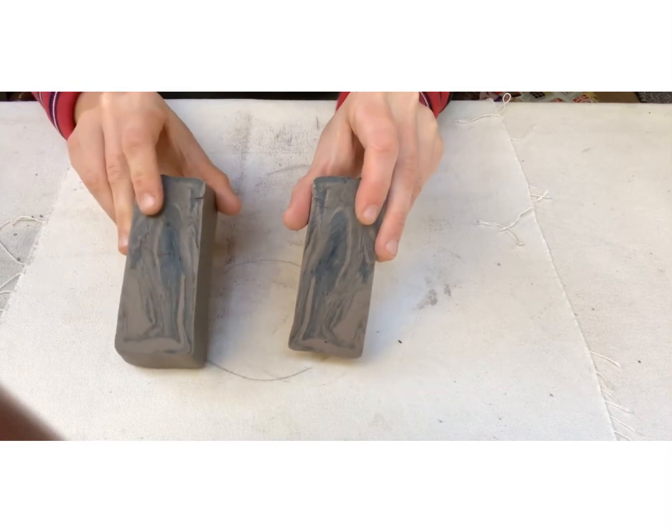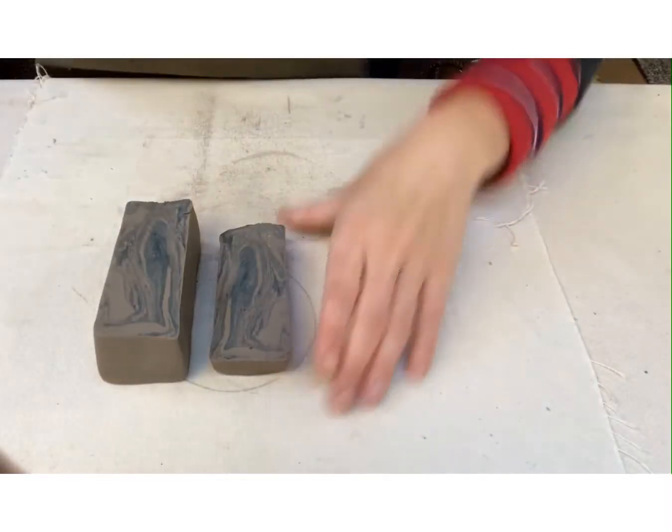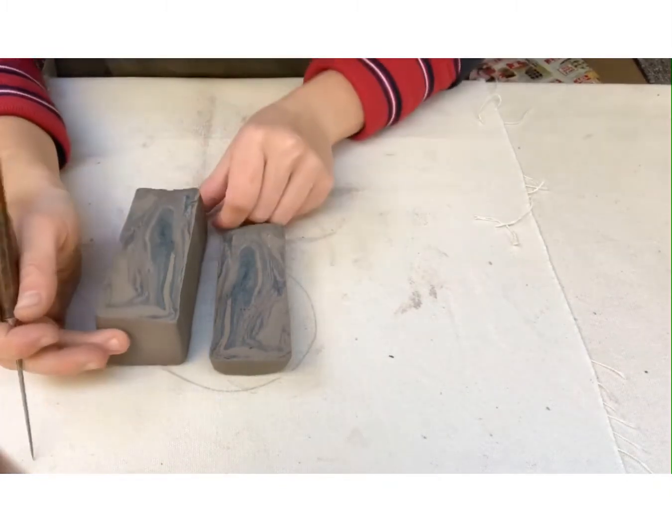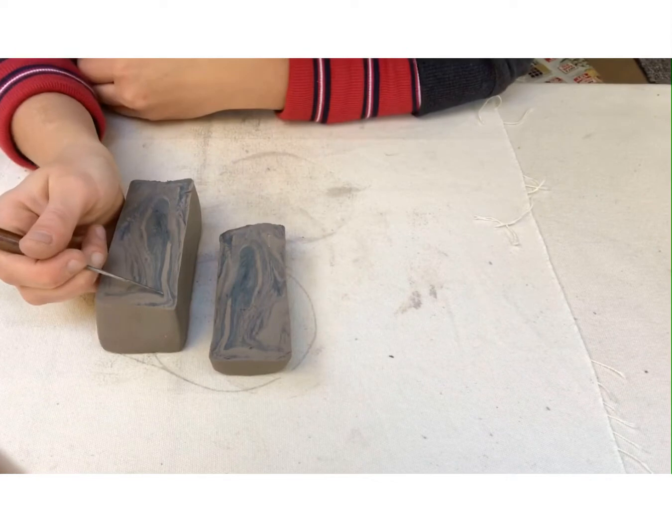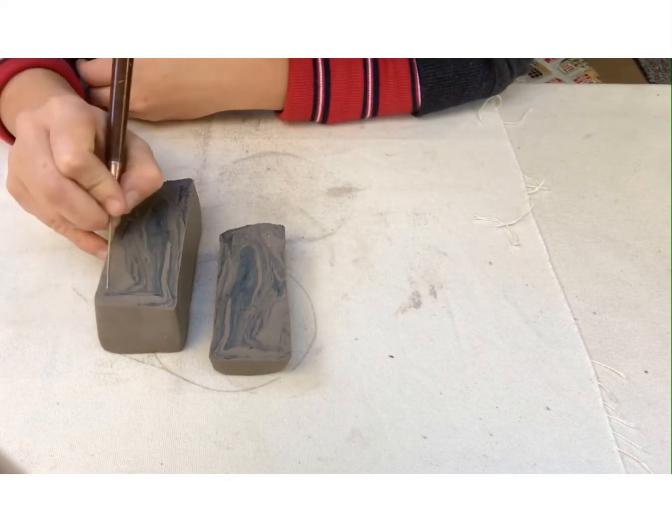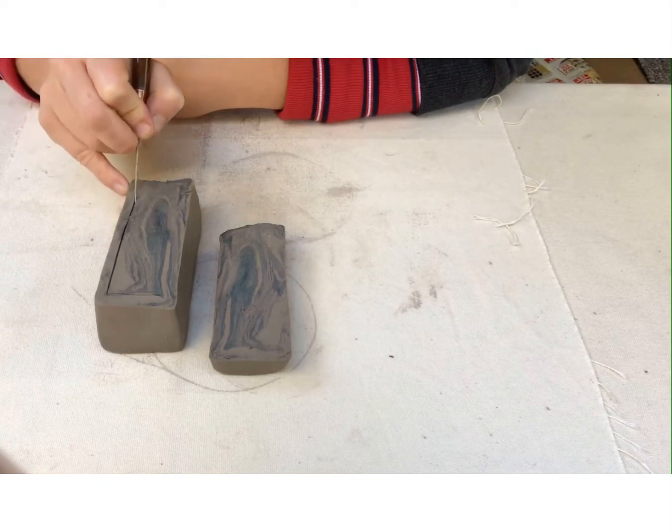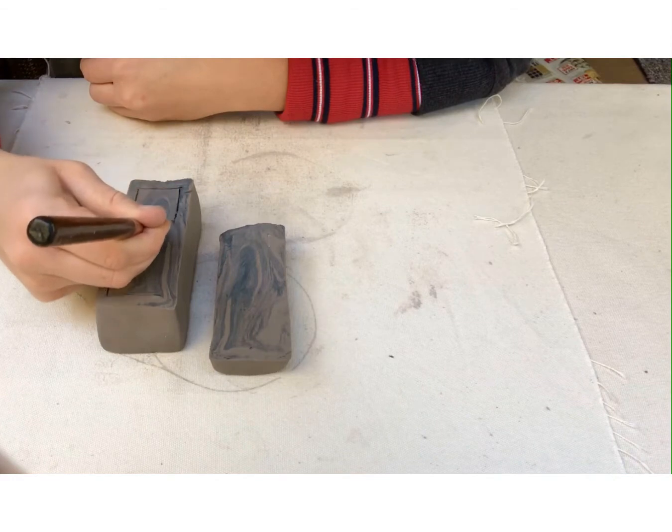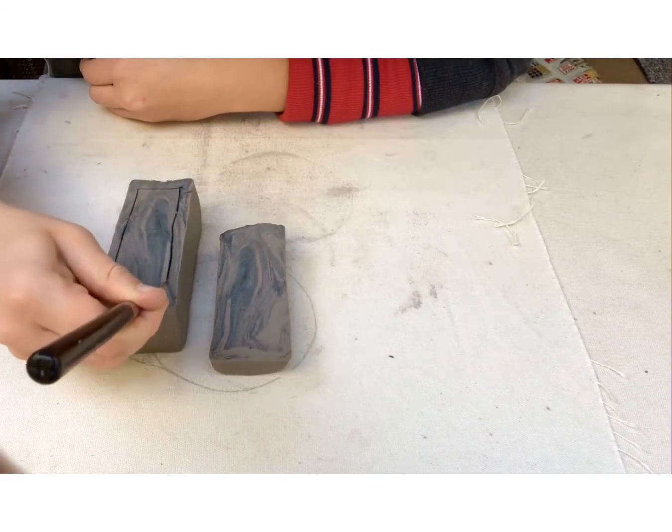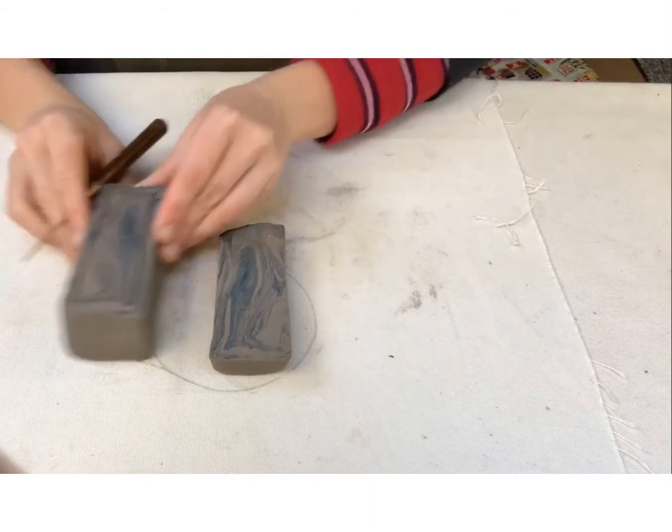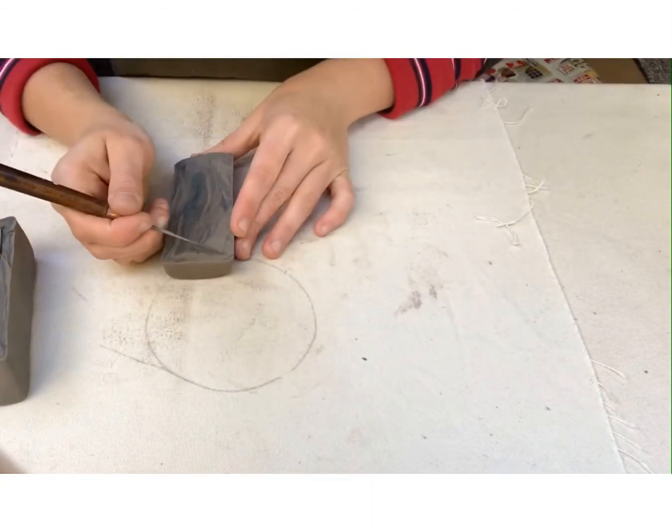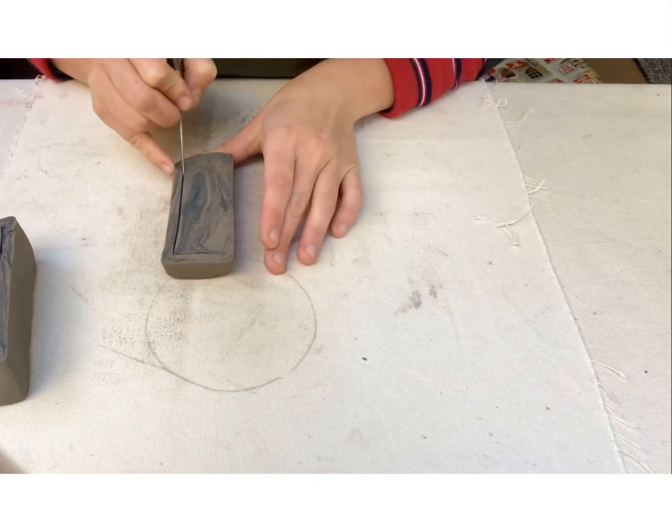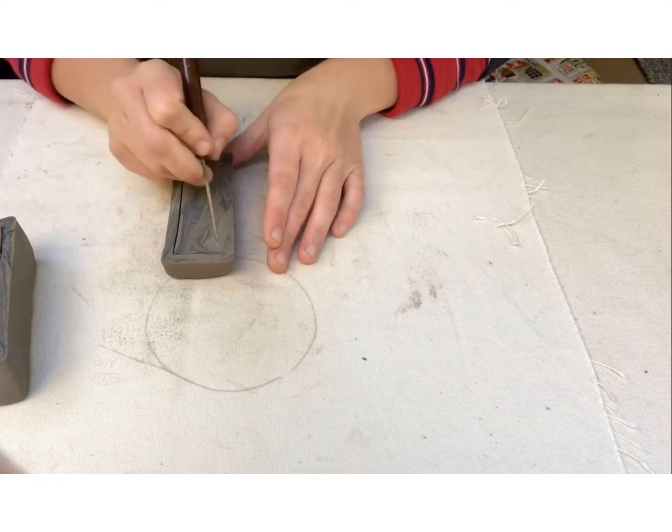Just before we start hollowing out, I recommend you draw a line about six millimeters wide from the edge. This will keep you in line with the hollowing so that the wall has an even thickness all around.